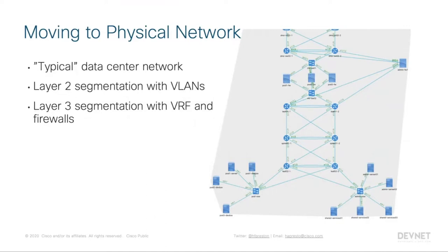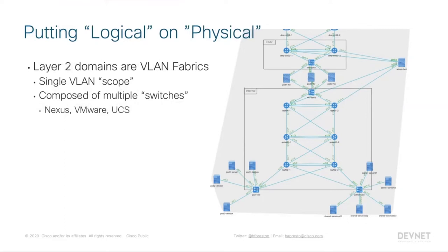Our first challenge was taking that logical layer two and layer three segmentation and overlaying it on the physical environment. We do that using service concepts built on top of our workflow. The first is what we call a VLAN fabric — a single area of VLAN scope. Any switches connected together with VLAN trunks where VLAN 101 means the same thing across every device would be a VLAN fabric. Each fabric is composed of multiple switches, including Nexus 9000s, VMware DVS, and Cisco UCS.